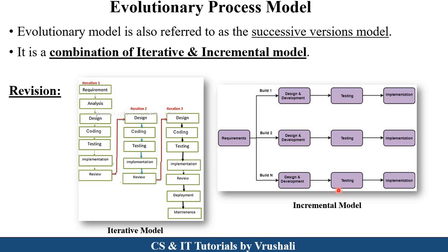Now what is the incremental model? In the incremental model they do not develop a complete product at the same time. They first gather all the requirements from the customer, and these requirements are then frozen. After collecting requirements they divide them into multiple modules — module by module development is the incremental approach. For example, suppose a customer wants a college management system. After gathering requirements, first they develop the attendance module — they design, develop, and test that module. Second is the feedback module — they design, develop, and test it. Third is the teacher module — they again design, develop, and test it. Each module goes through the complete software development life cycle. After completing the full product they take feedback from the customer. This is the incremental model.